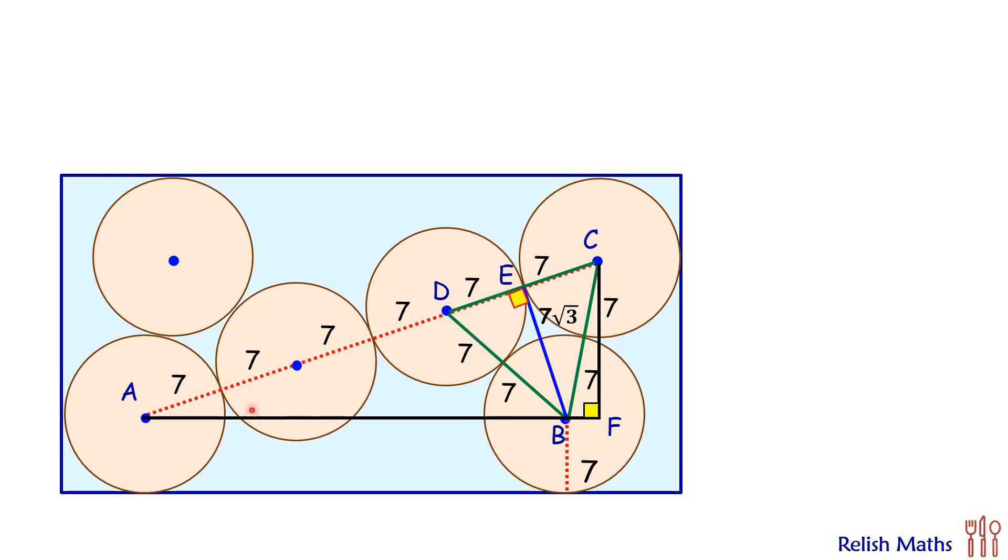So this is where we are getting our second right angle triangle, that is triangle AEB, or this yellow triangle. Applying Pythagoras theorem here, we'll get AB² = AE² + EB².